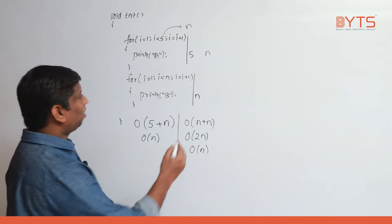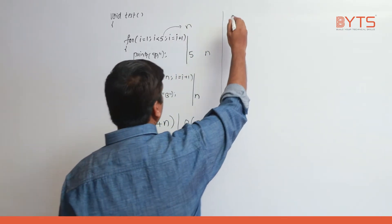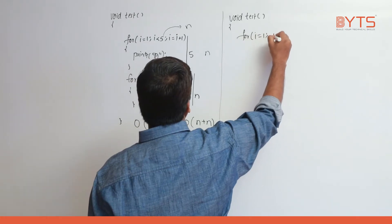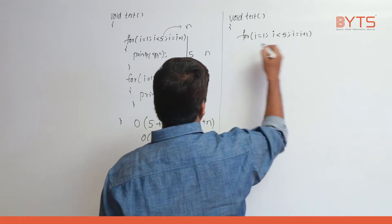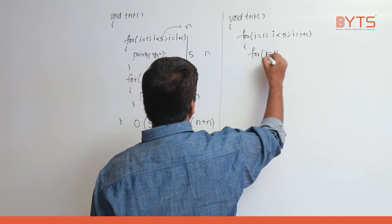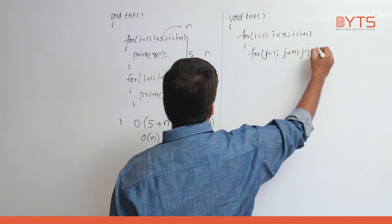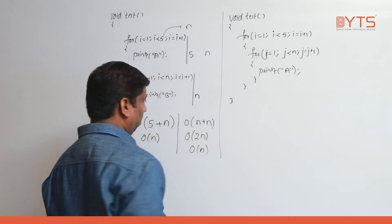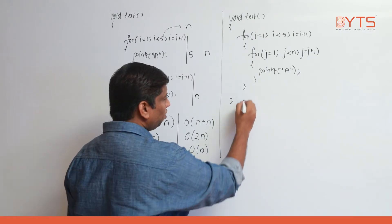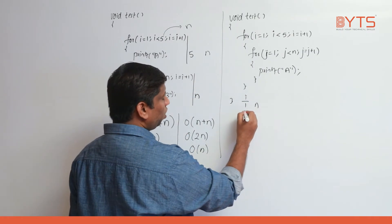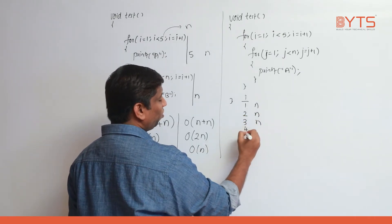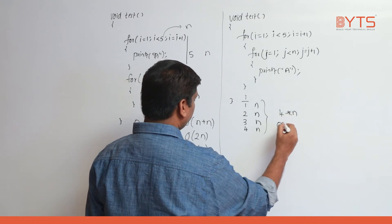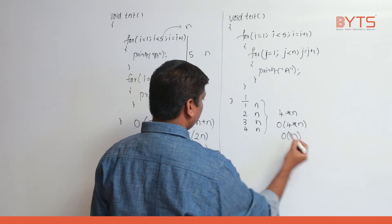Let me take another example. Void test. For i equal to 1, i less than 5, i equal to i plus 1 — outer loop. Inside: for j equal to 1, j less than or equal to n, j equal to j plus 1, printf A. When i is 1, inner loop repeats n times. When i is 2, n times. When i is 3, n times. When i is 4, n times. At i equals 5, the condition is false. So this inner loop repeats 4 into n times.